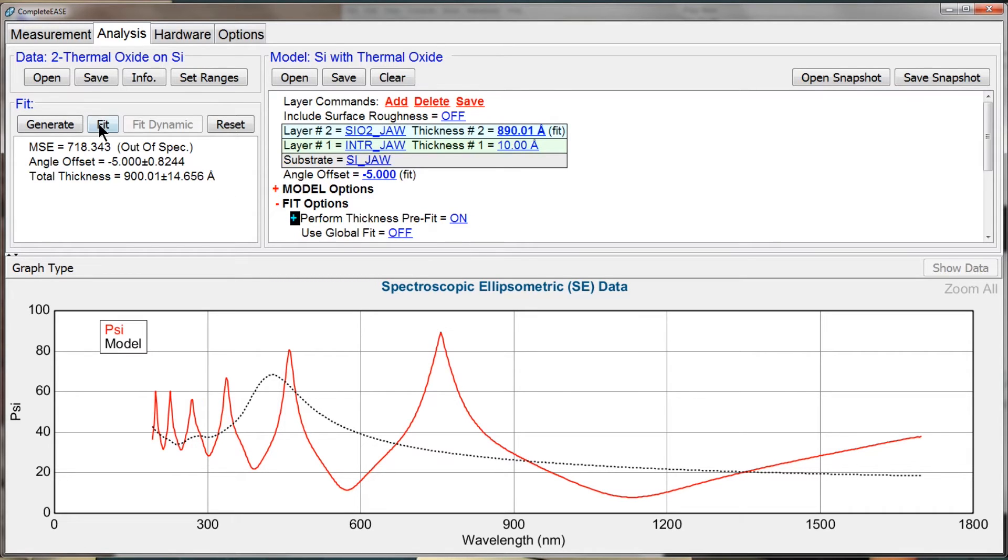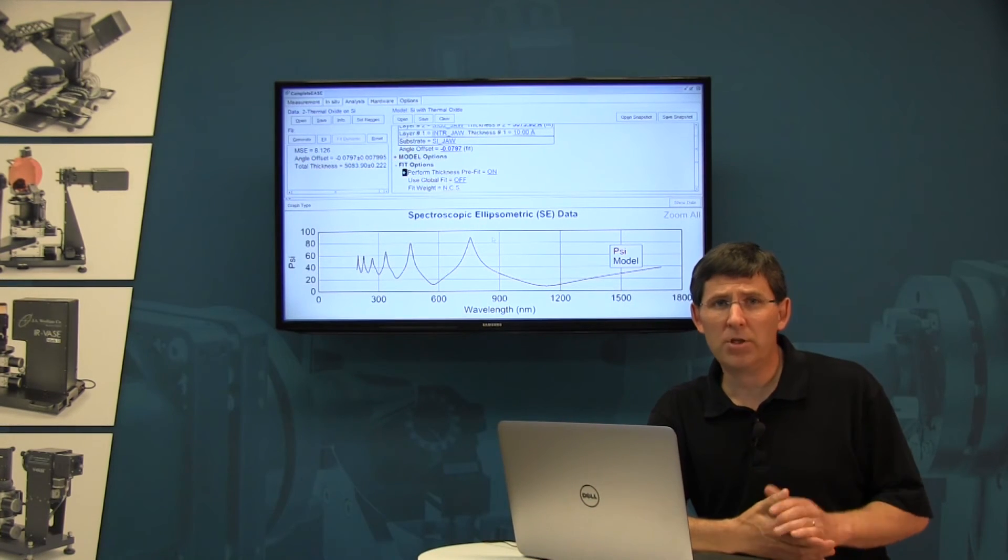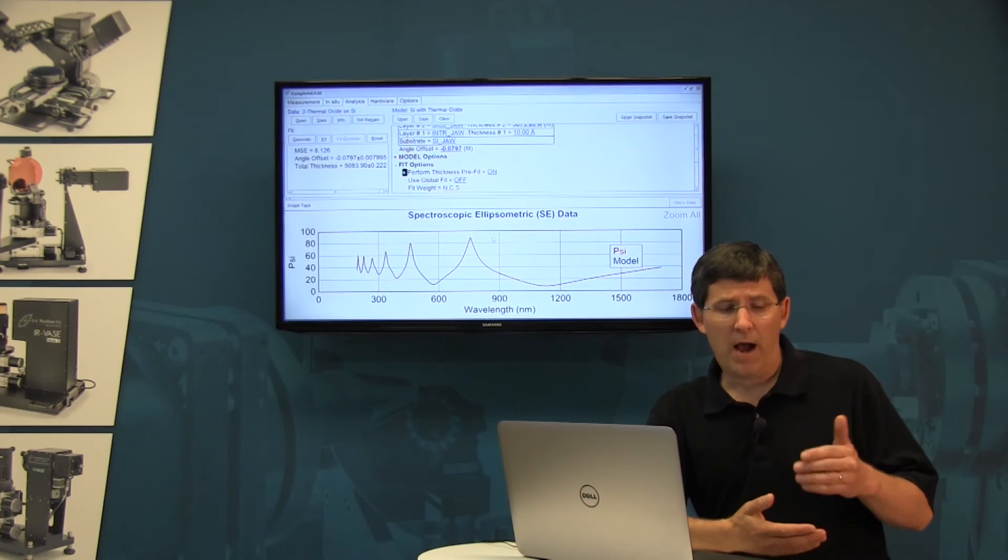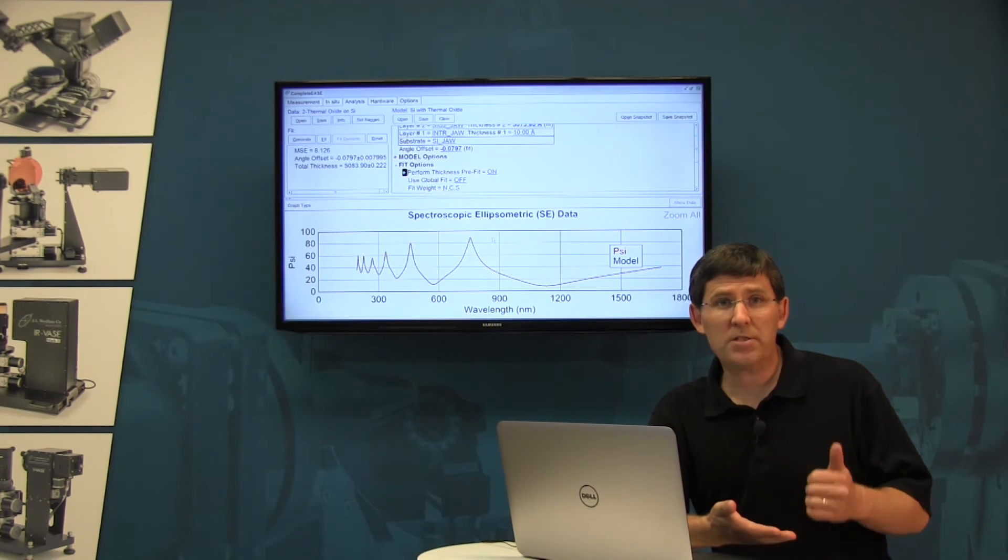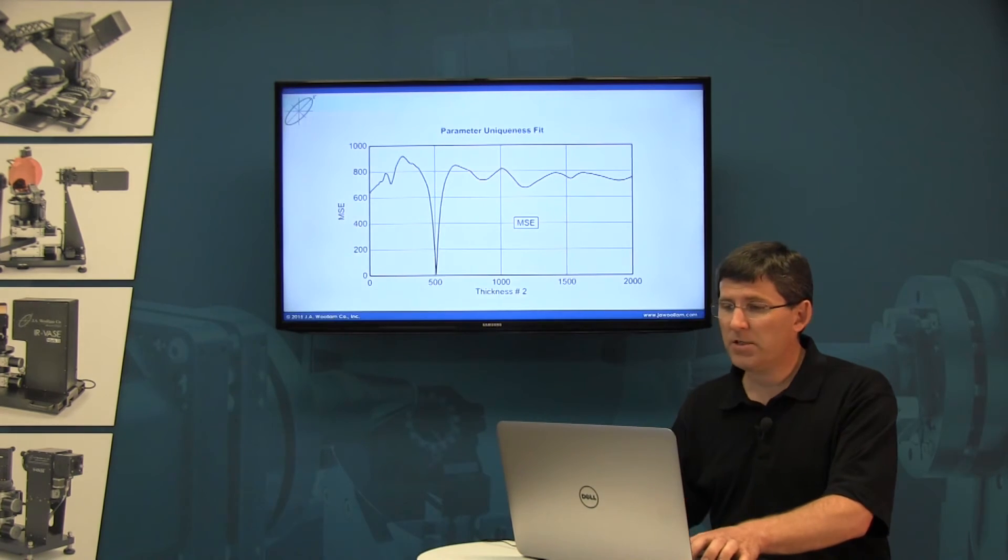Notice that now when I press fit, it immediately jumps to the correct solution. And that's because the thickness pre-fit is doing something very similar to the way our brain works. I saw that there were lots of oscillations. That meant the film had to be thicker.